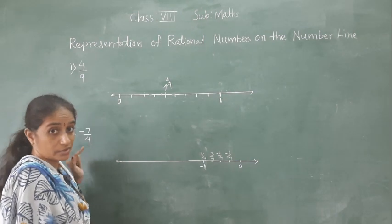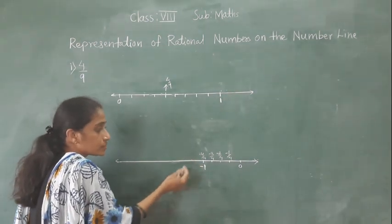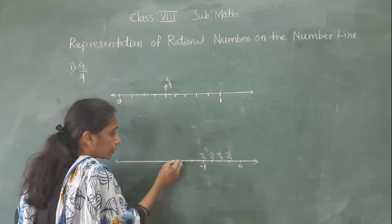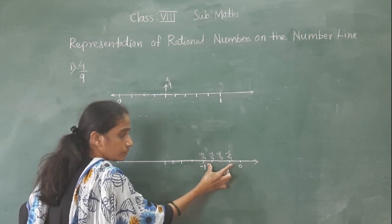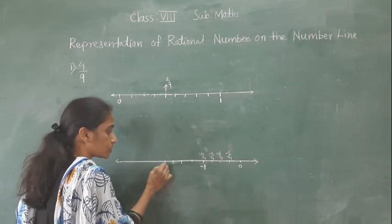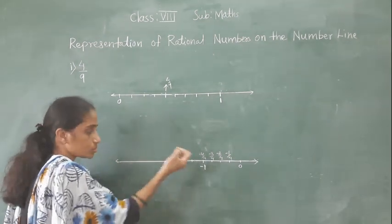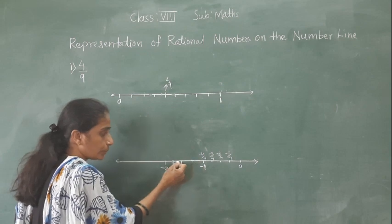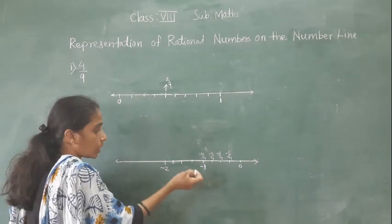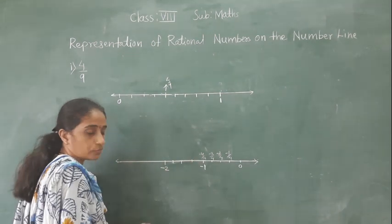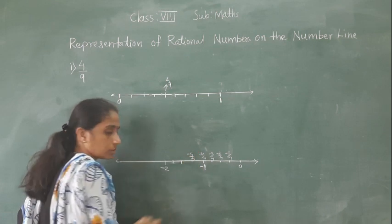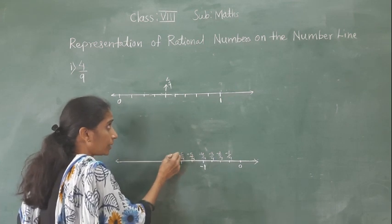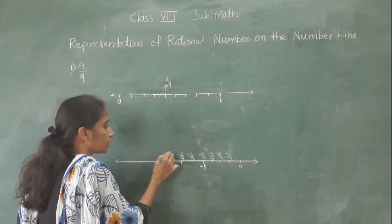We want minus 7 upon 4, so we still have to draw more lines. We take equal distance — from 0 to minus 1 we have 4 equal parts; the same way, from minus 1 to minus 2 we make 4 more equal parts. Count: 1, 2, 3, 4 — and the 4th part gives minus 2. So continuing: minus 4 upon 4, minus 5 upon 4, minus 6 upon 4, minus 7 upon 4, and minus 8 upon 4. Dividing: 4 twos are 8, so minus 8 upon 4 equals minus 2.